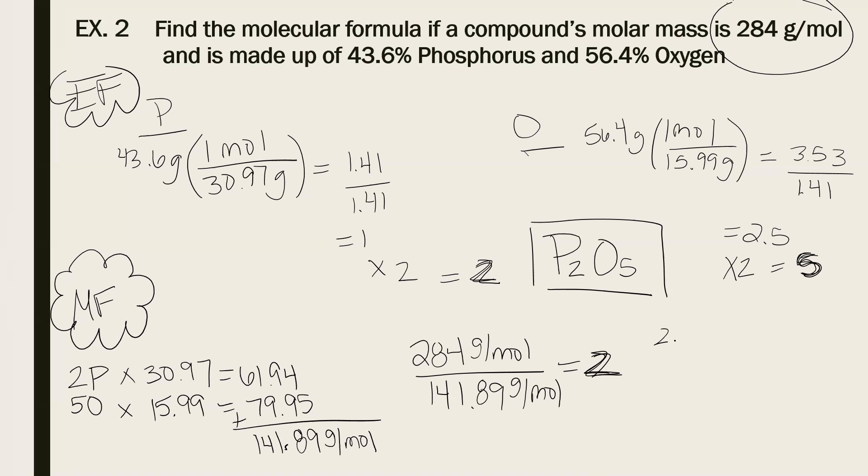Dividing those two, I get very, very close to 2. So my multiplier is 2. So I take my multiplier times my empirical formula, and I get P4O10. That is the molecular formula. You can check this. Take 4 phosphorus plus 10 oxygen and it should be very close to 284. When I did it, I got 283.78.